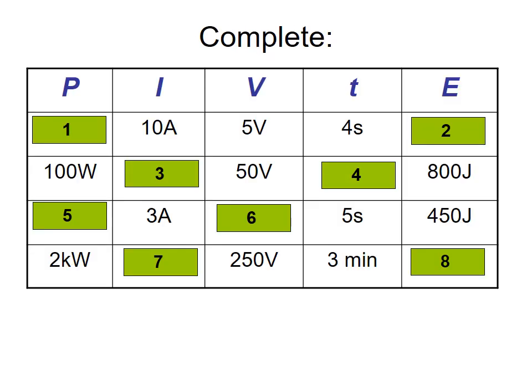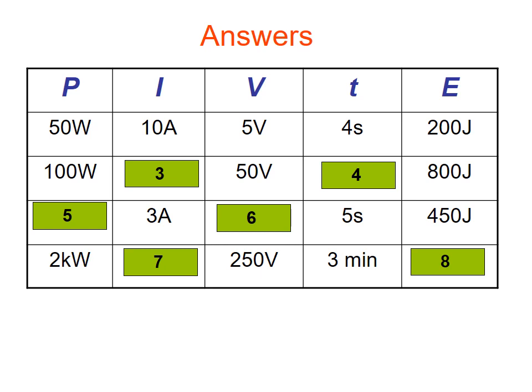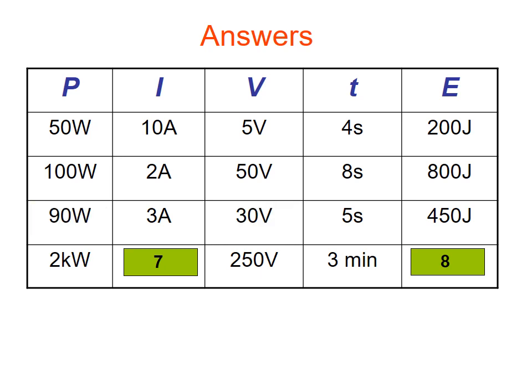Now complete these eight values for the energy equation. The answers are: P equals 50 watts; E equals 200 joules; current equals 2 amps; time equals 8 seconds; power equals 90 watts; voltage equals 30 volts; current equals 8 amps; and finally, energy dissipated equals 360 kilojoules.